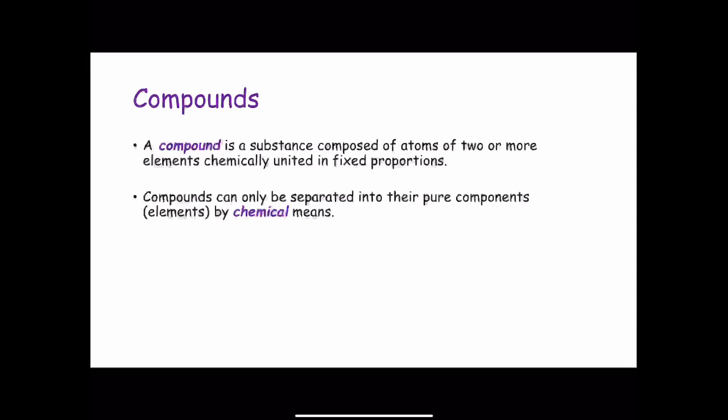Atoms of most elements can interact with one another to form compounds. Hydrogen gas, for example, burns in oxygen to form water, which has properties that are distinctly different from those of the starting materials. Water is made up of two parts hydrogen and one part oxygen. The composition doesn't change no matter where the water comes from. Thus, water is a compound. A compound is a substance composed of atoms of two or more elements, chemically united in fixed proportions. Unlike mixtures, compounds can be separated only by chemical means into their pure components.